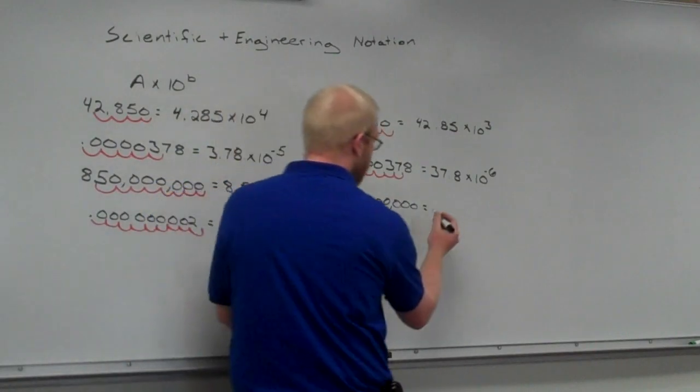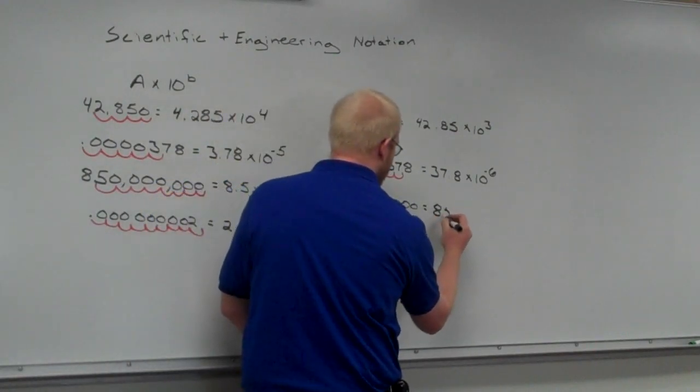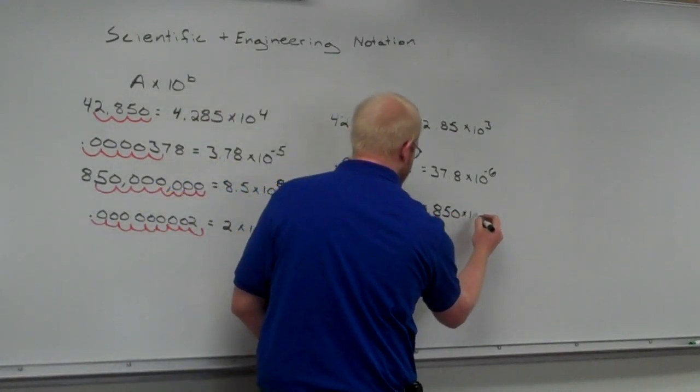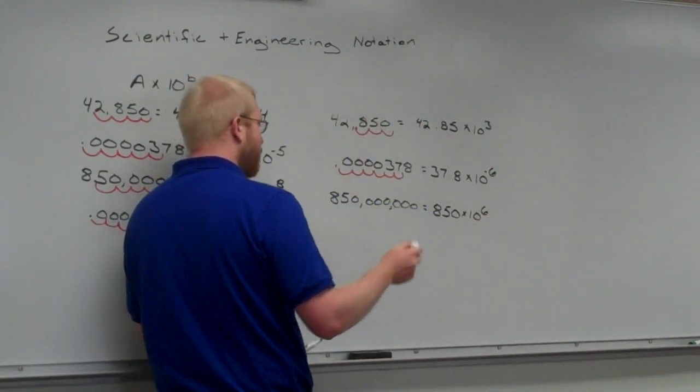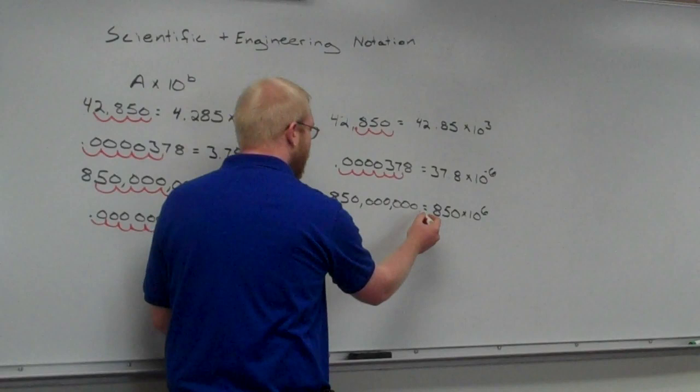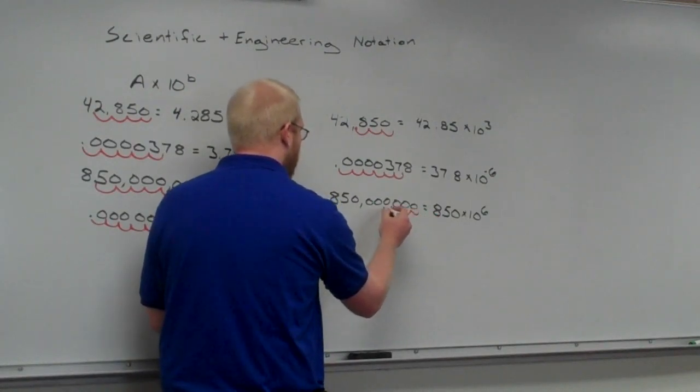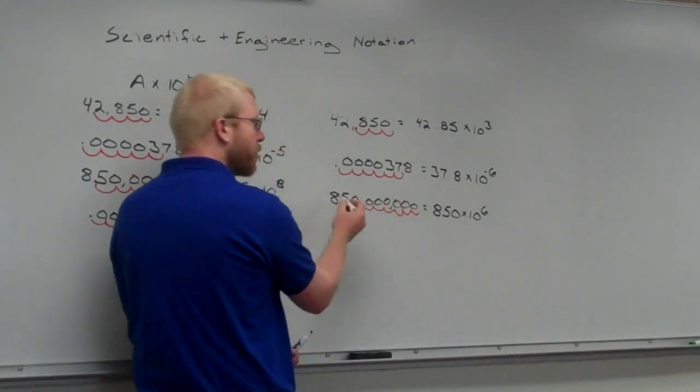850 times 10 to the 6. Because, if we moved to 9 places, it would be 0.85. So, they did 1, 2, 3. 1, 2, 3.